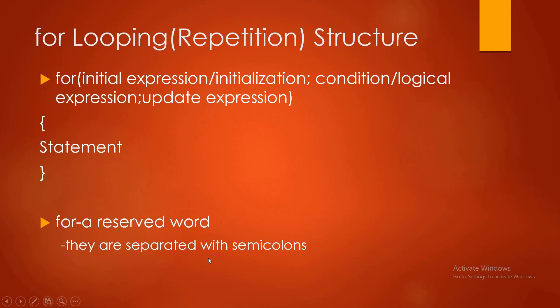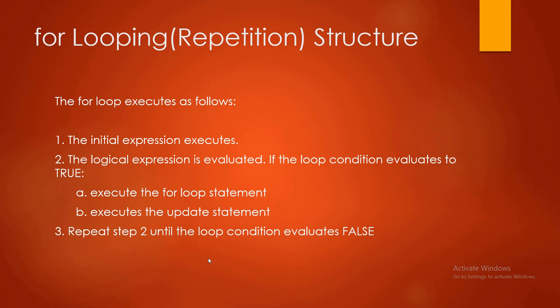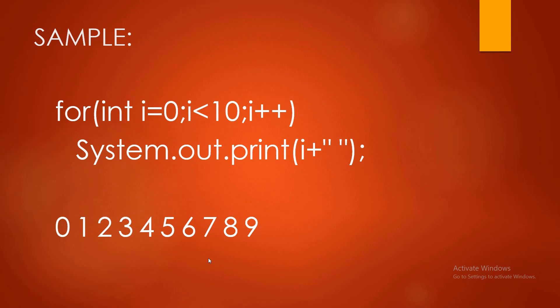The parts of a for loop are separated by semicolons. Here is how to execute the for loop: first, the initial expression executes. Second, the logical expression is evaluated — if the loop condition evaluates to true, you execute the for loop statement and then execute the update statement. Then you repeat step two until the loop condition evaluates to false. The loop does not end — it keeps looping — unless our condition becomes false.